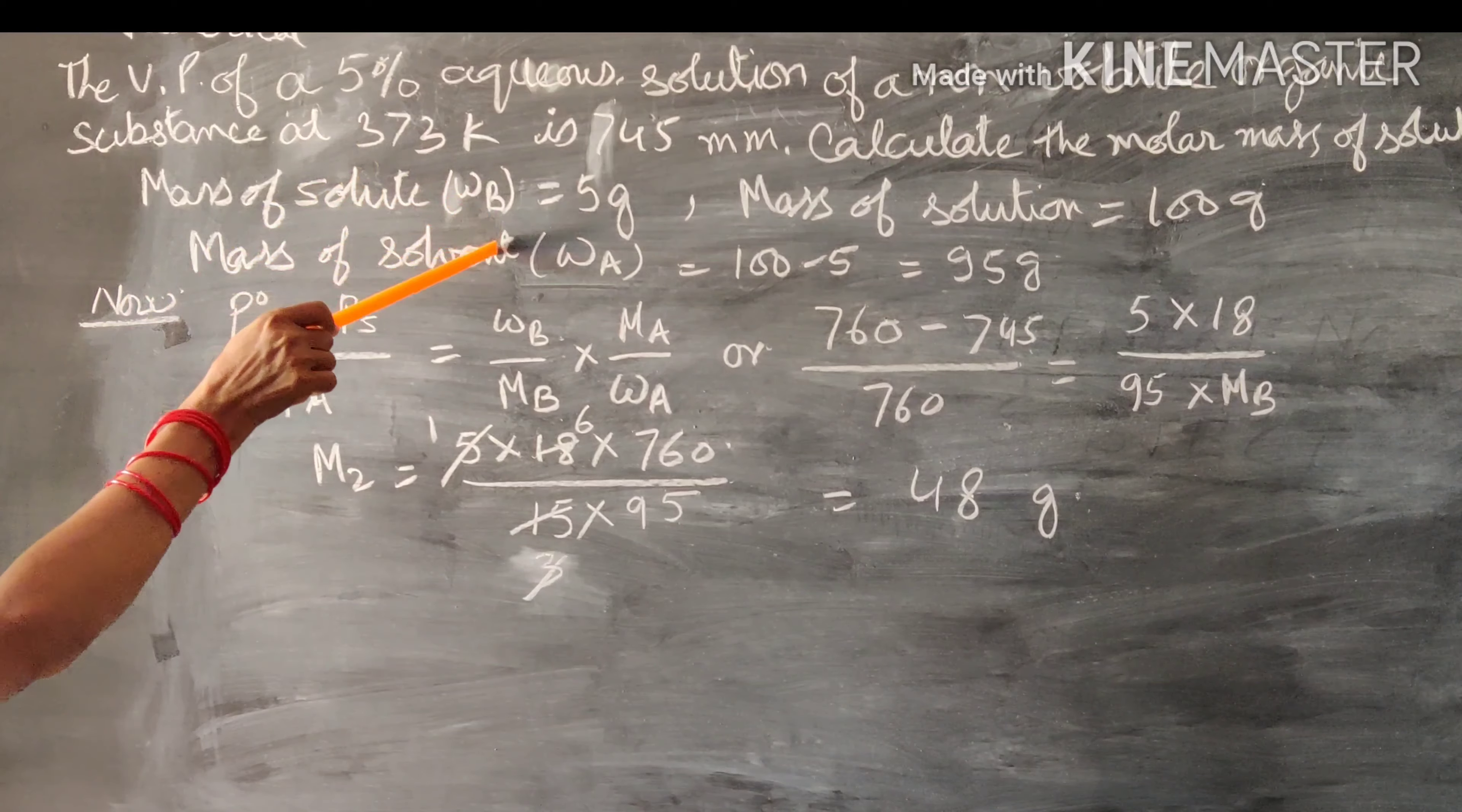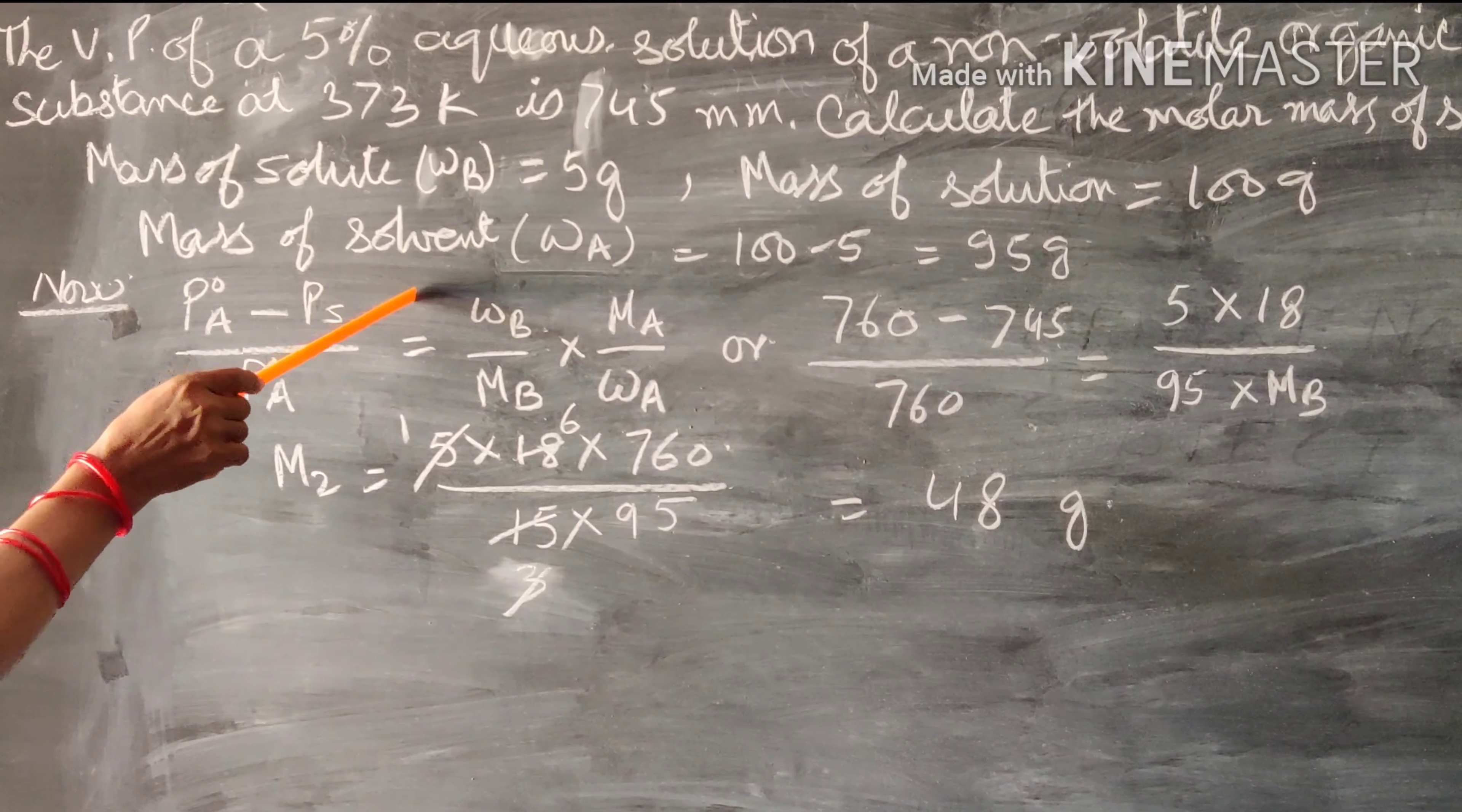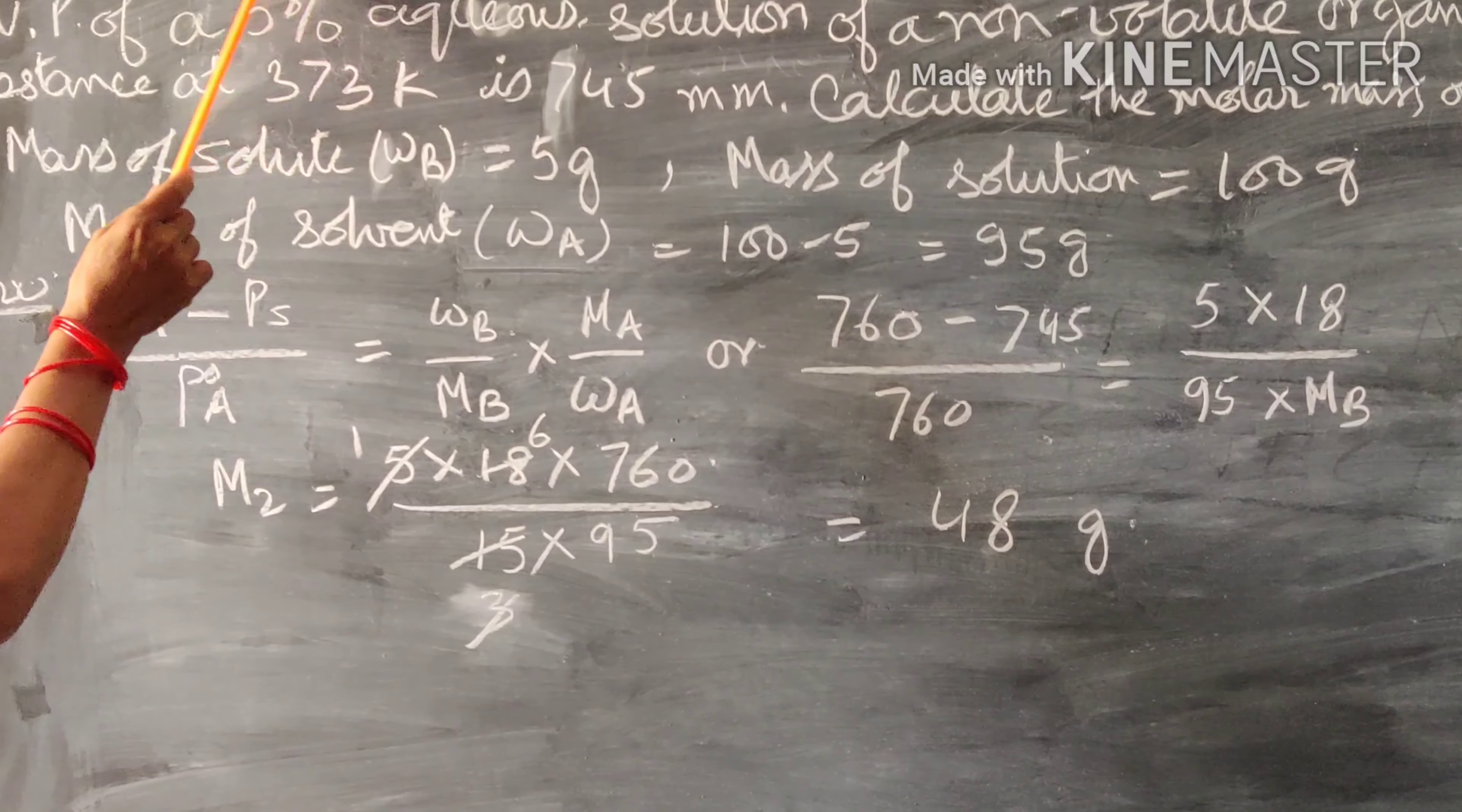The mass of the solution is 100 grams. Now, the mass of the solvent is equal to 100 minus 5, that is 95 grams, because it is a 5% solution.